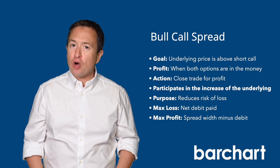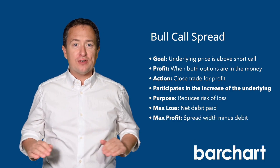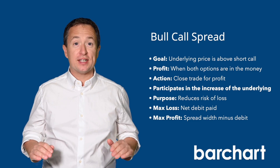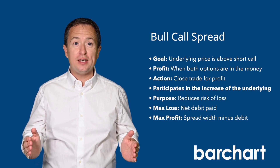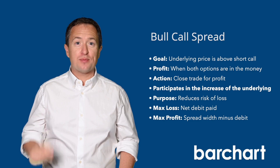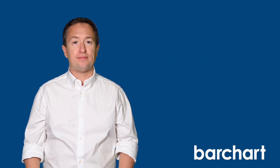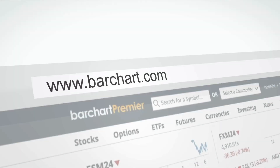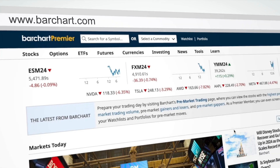The maximum profit is limited to the difference between the two strike prices — that's the width of the spread — less the premium paid. Using Barchart, you can look for bull call spreads, and here's how.